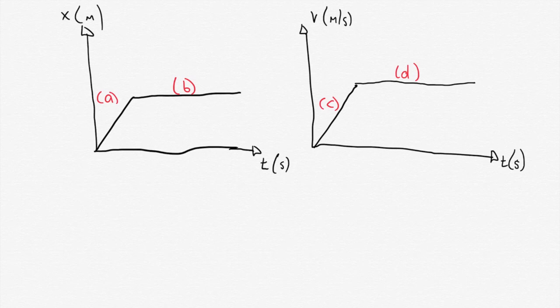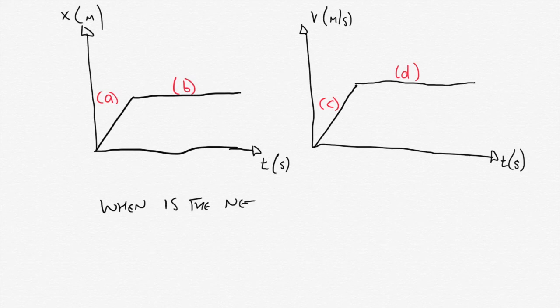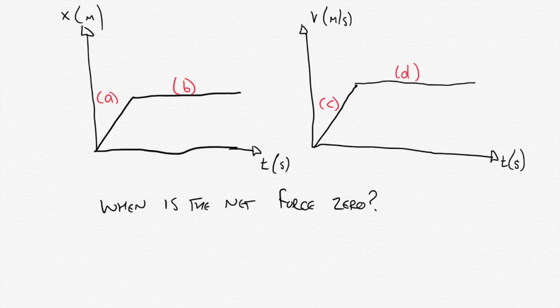Now the two graphs have the same shape and each of them has two regions. So the question we want to ask ourselves here is: when is the net force zero on whatever object this might be? These two graphs trace the position versus time, displacement versus time, and velocity versus time of an object. And in those four regions, when is the net force going to be zero? Can we extract that information from the graphs?